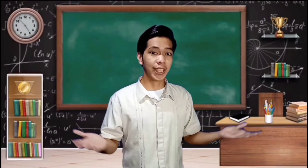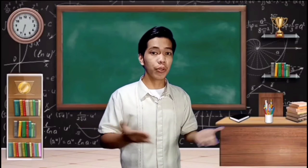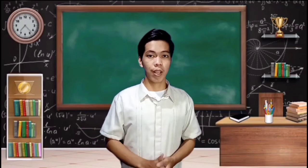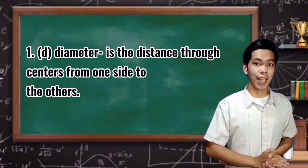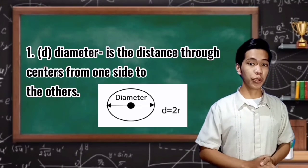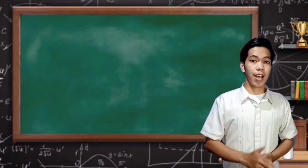To understand and be able to compute for the circumference, we need to know some terms. Number 1: Diameter. Diameter is the distance through the center from one side to the other.